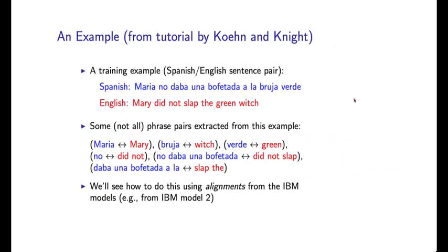Here's an example which illustrates the basic idea of how phrases are extracted from translation examples. This is taken from a tutorial by Philip Cohen and Kevin Knight. Our training example in this instance is this Spanish sentence aligned with this English sentence. These two sentences are translations of each other. We can run the IBM models and get some kind of alignment. But once we've derived the alignment, we can start extracting phrase pairs from this example. Here are some examples.